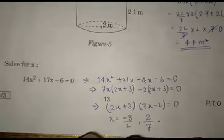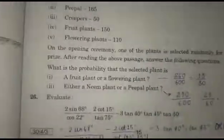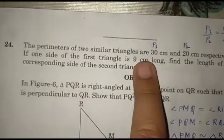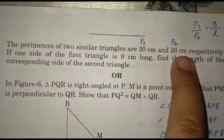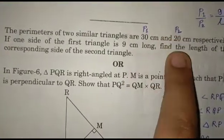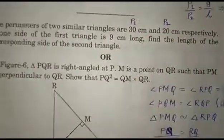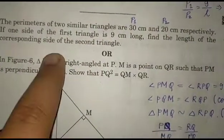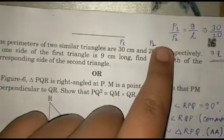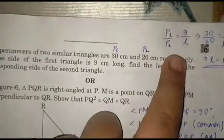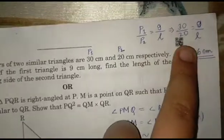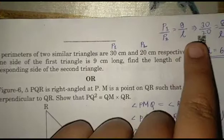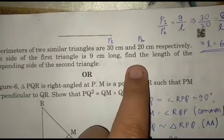Question 24, first part: The perimeters of two similar triangles are 30 cm and 20 cm. Let P1 be 30 cm and P2 be 20 cm. If one side of the first triangle is 9 cm long, find the length of the corresponding side of the second triangle. We know the ratio of perimeters equals the ratio of sides, so let L be the length of the corresponding side. L equals 6 cm, which is the answer.